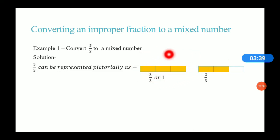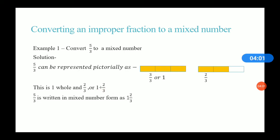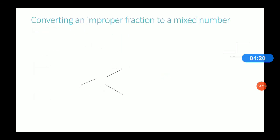So 3/3 is 1 whole and 2/3 is the fraction part. This means 5/3 equals 1 plus 2/3, which can be written in mixed number form as 1 2/3. So 1 2/3 is nothing but 1 plus 2/3, or 1 whole and 2/3. That is the answer: 1 2/3.